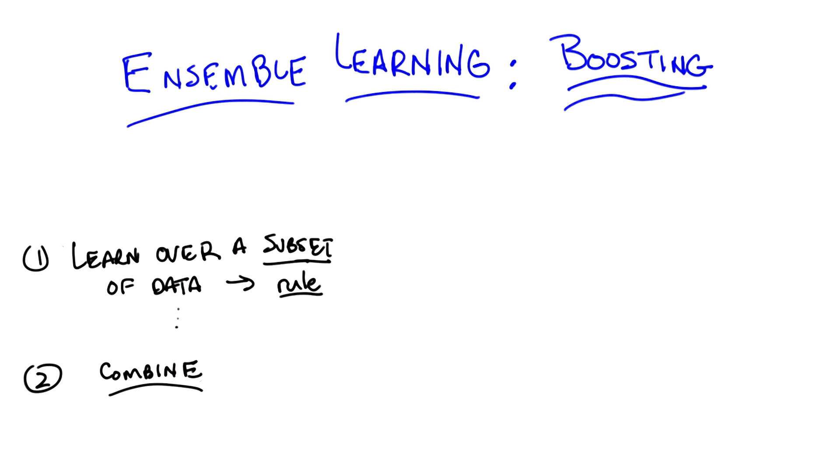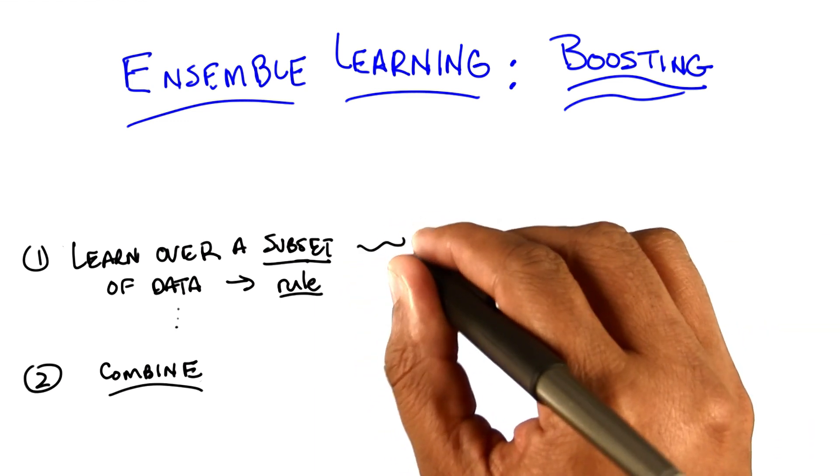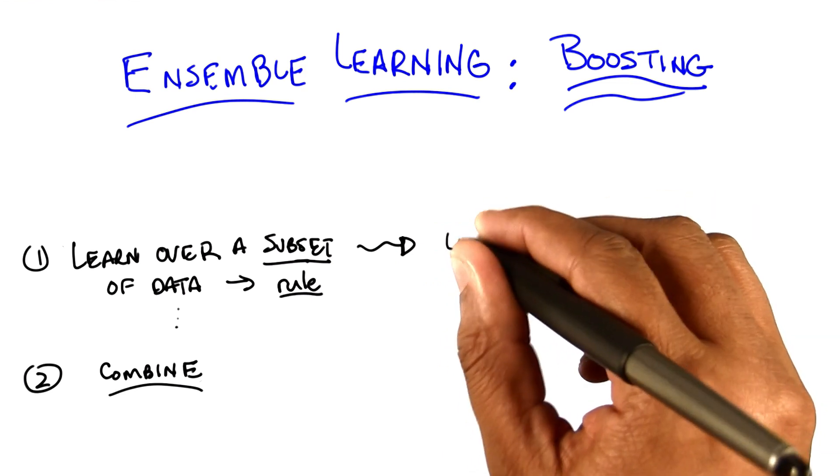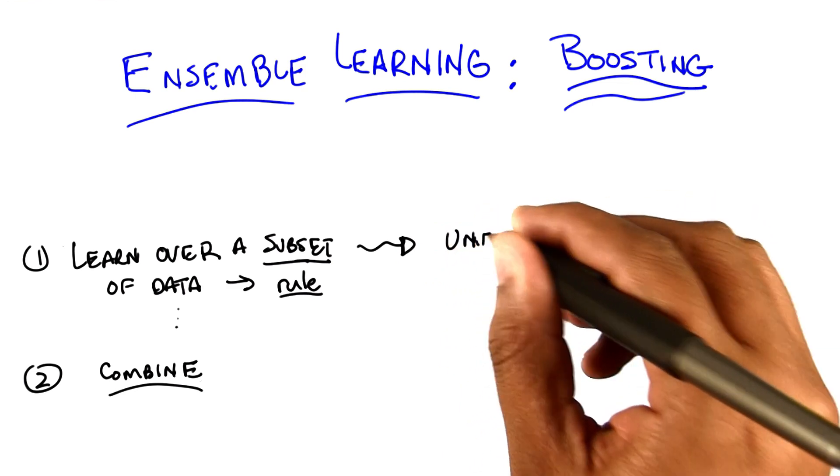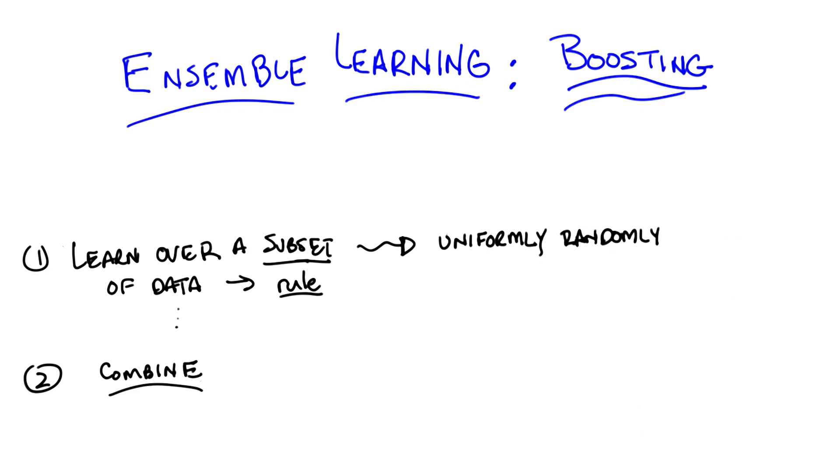Well, actually, let's explore that for a minute. Here's kind of the dumbest thing you could imagine doing that turns out to work out pretty well. We're going to pick subsets by, I'm going to say uniformly, just to be specific about it. So we're going to do the simplest thing you could think of doing.